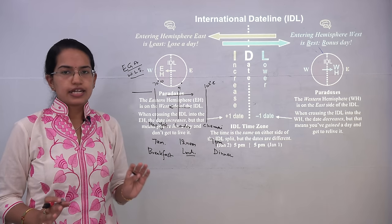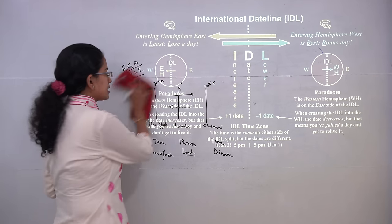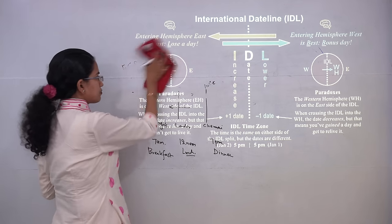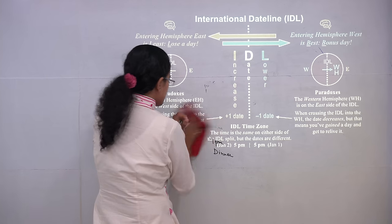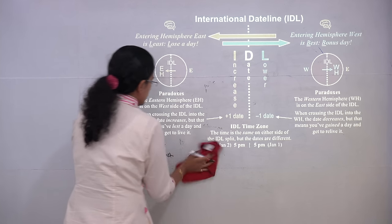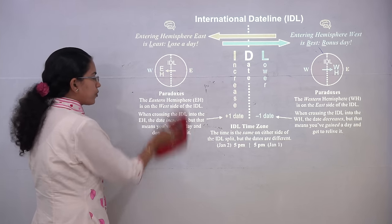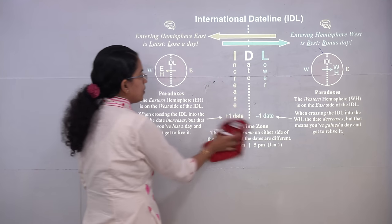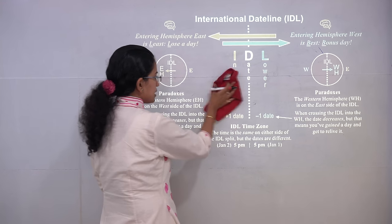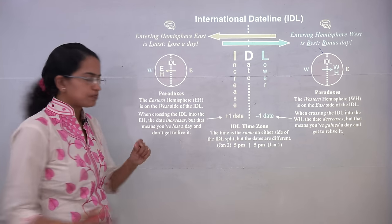The International Date Line runs at 180 degrees. It has bends at the Bering Strait, Fiji, and Tonga. These bends are meant to keep entire nations within one time zone — otherwise, if it were a straight line, it would cut through those nations and give them two different time zones.